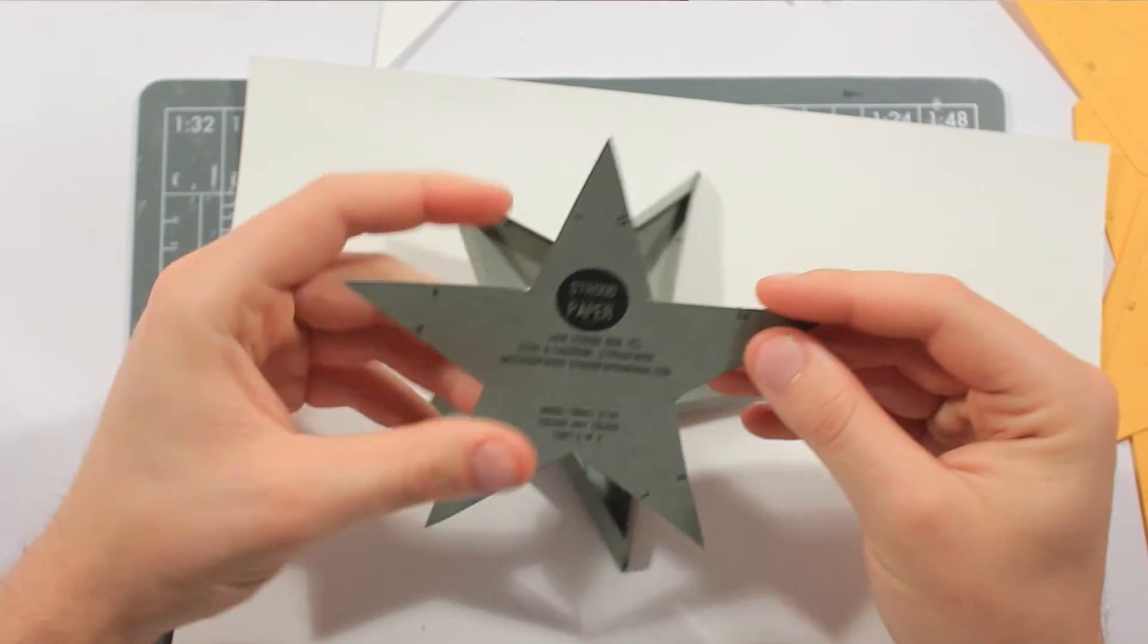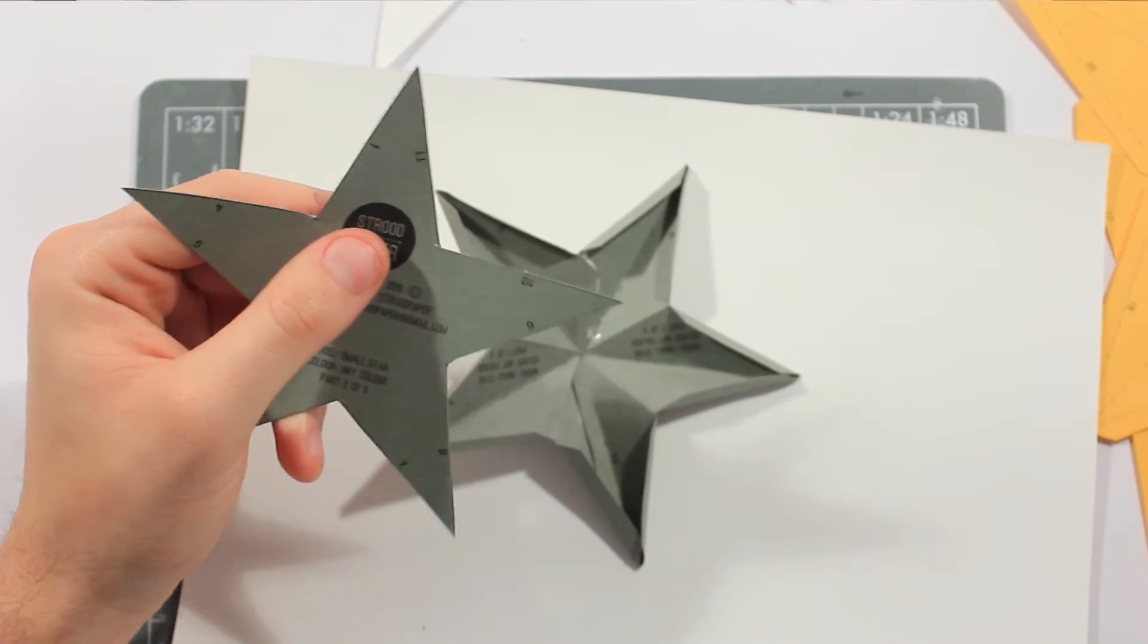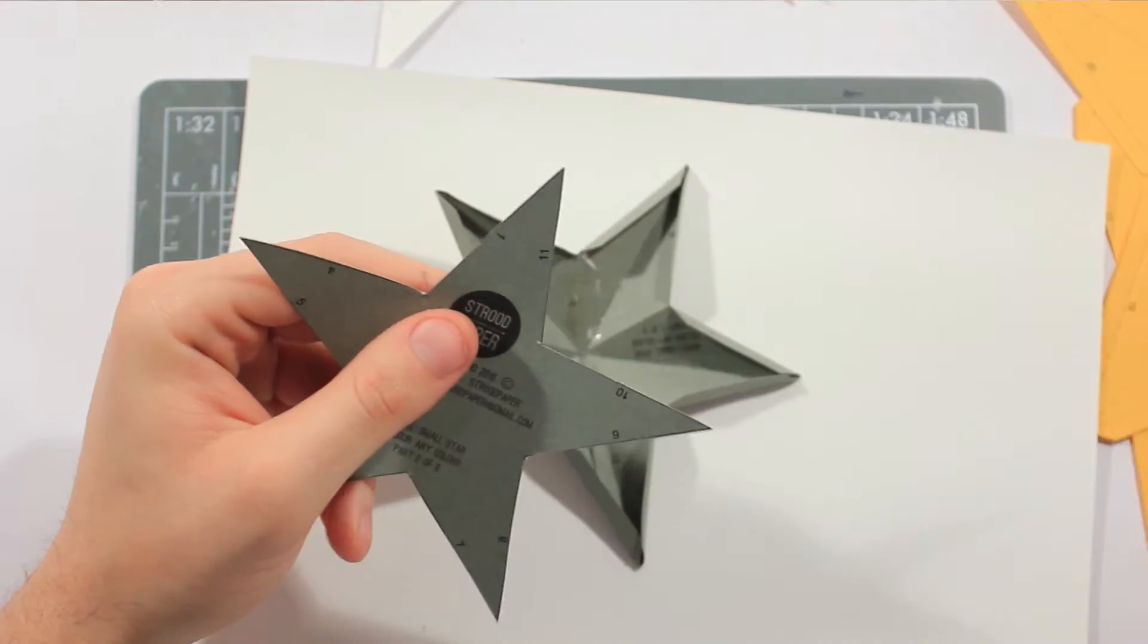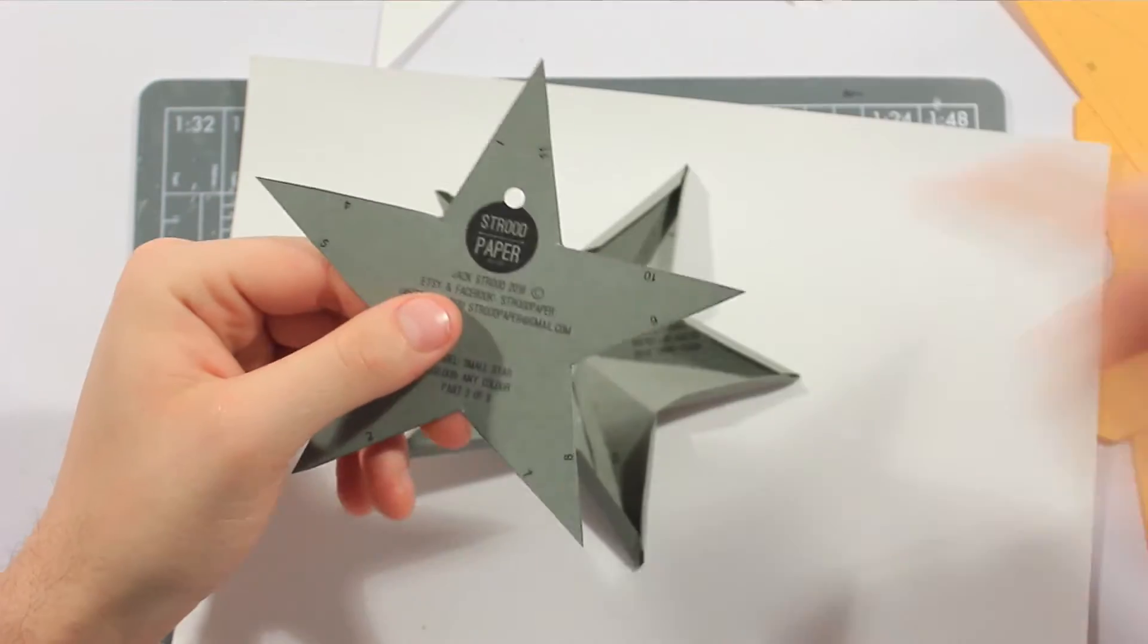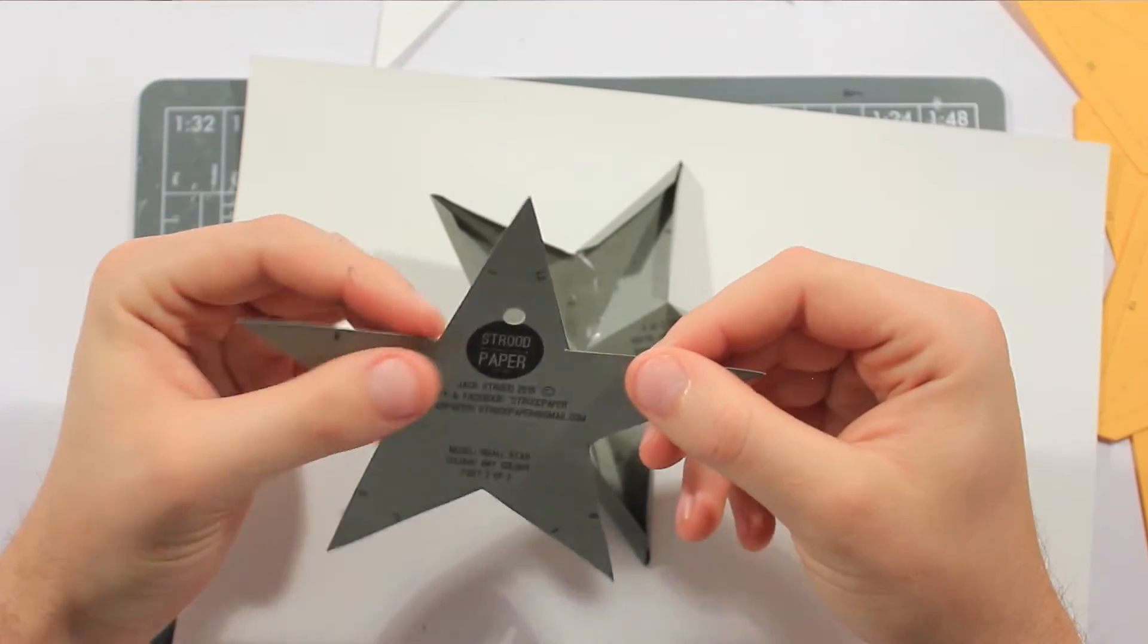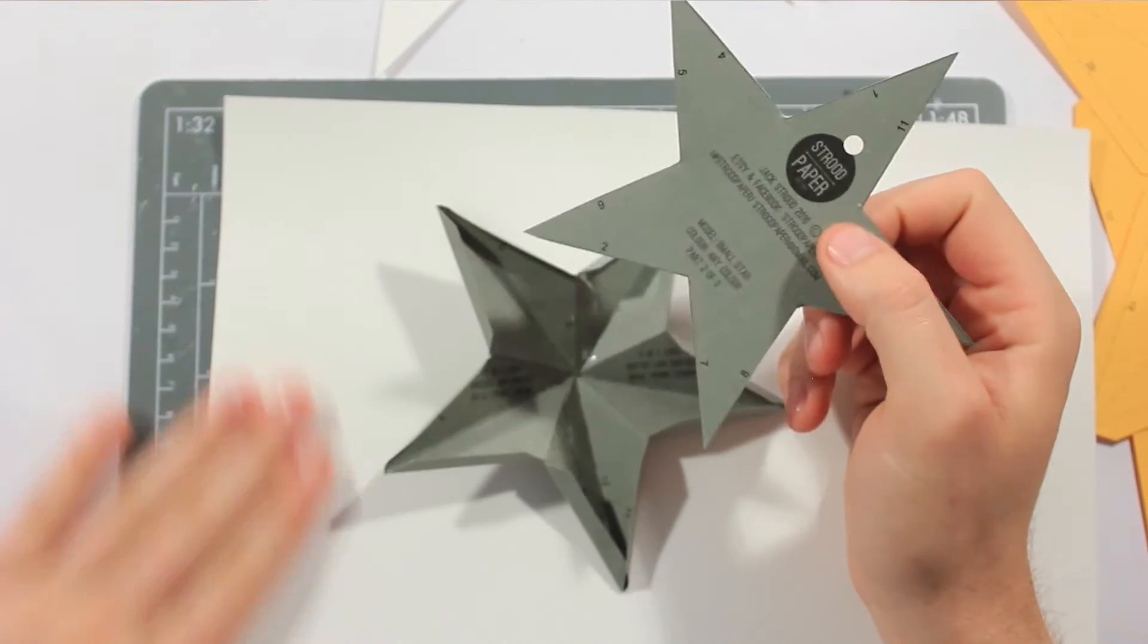So with the back of the star, it's kind of useful if you just take a hole punch and put a hole there, this is so you can hang it up, on the wall or on the tree or something like that, so it gives you a bit of a pinhole.